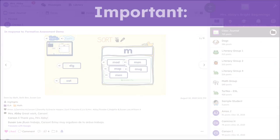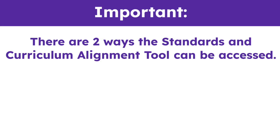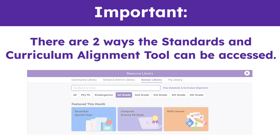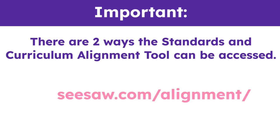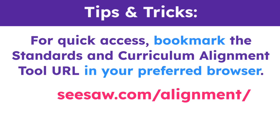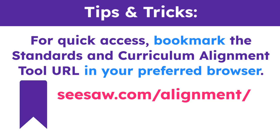It's important to note there are two ways the Standards and Curriculum Alignment Tool can be accessed. For this tutorial, we will access the tool through the Seesaw Library page while logged into the Seesaw app. But you can also access the tool by entering the page URL. For quick access, bookmark the Standards and Curriculum Alignment Tool URL in your preferred browser.